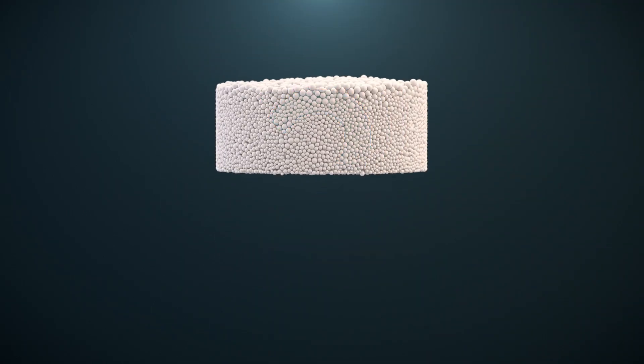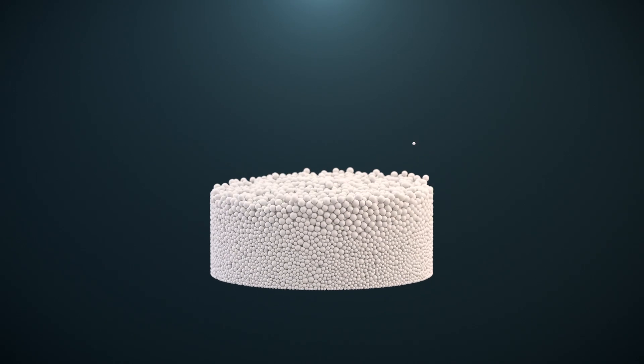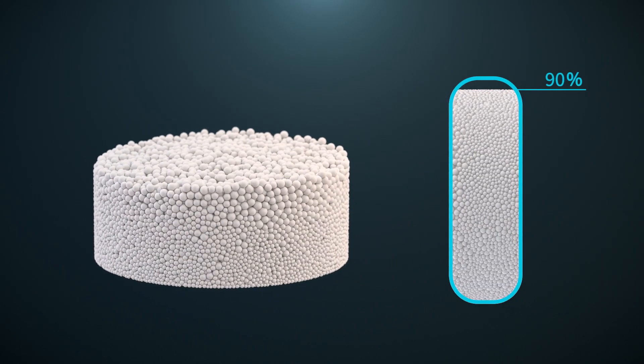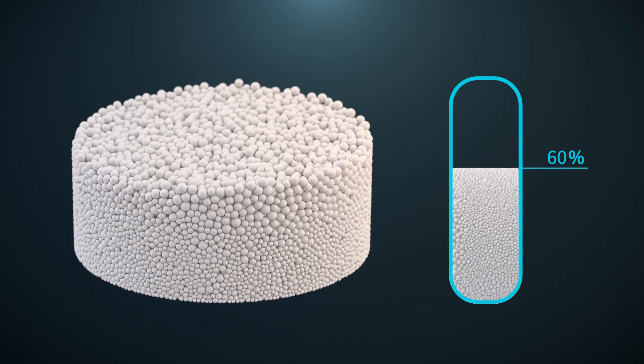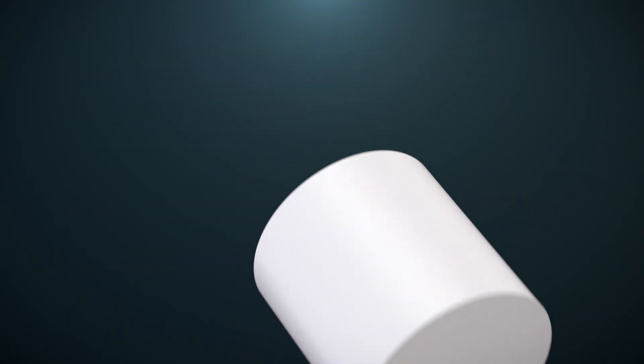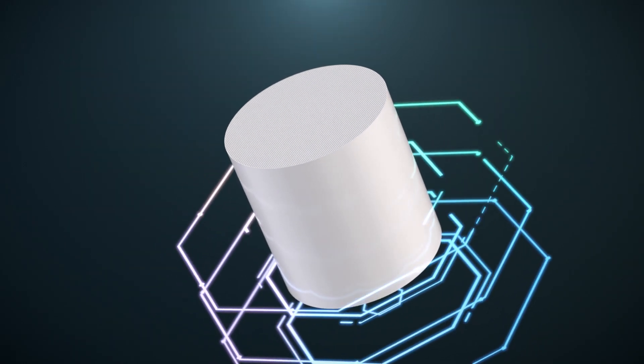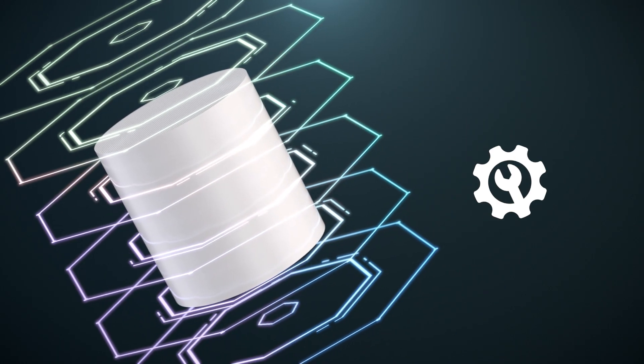Second, desiccant beads get pushed around the drying tower during cycling. This friction causes them to decay over time, which can compromise your dew point. Serides lasts much longer to protect your air quality and extend your service intervals.